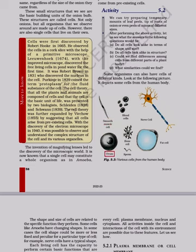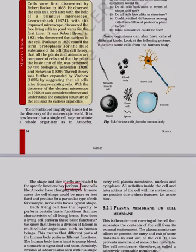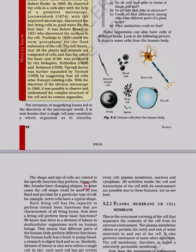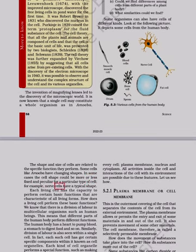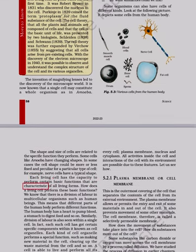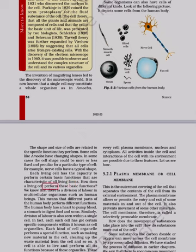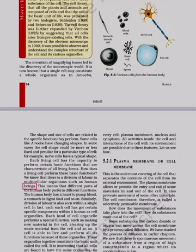Figure 5.3 shows various cells from the human body including smooth muscle cell, ovum, blood cells, bone cell, sperm, nerve cell, and fat cell. The shape and size of cells are related to the specific function they perform. Some cells like amoeba have changing shapes. In some cases the cell shape could be more or less fixed and peculiar for a particular type of cell — for example, nerve cells have a typical shape. Each living cell has the capacity to perform certain basic functions that are characteristic of all living forms. How does a living cell perform these basic functions?